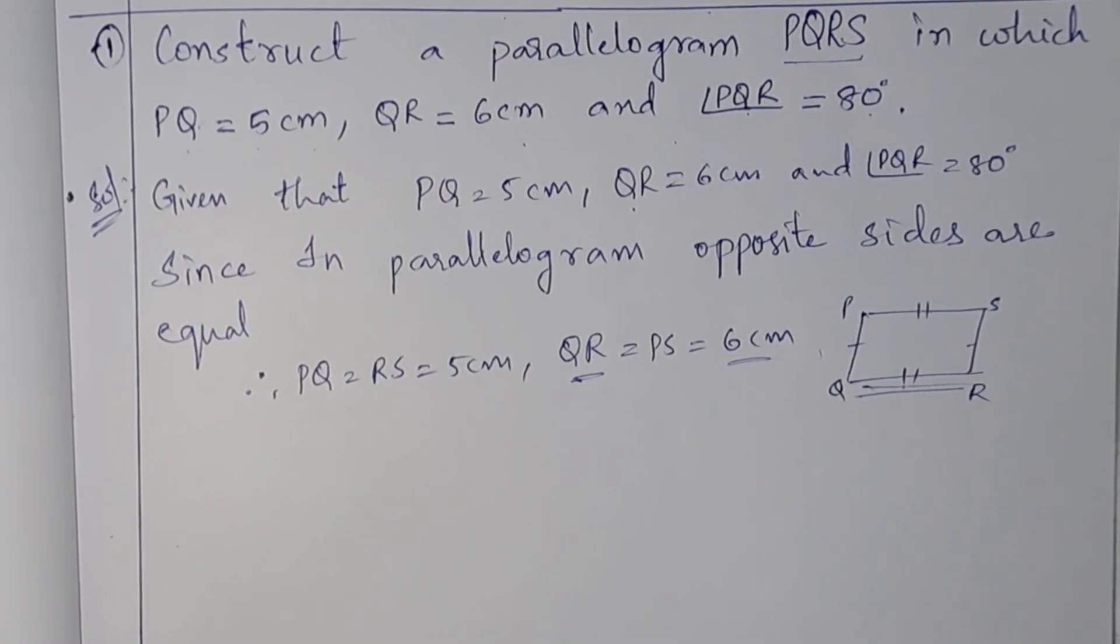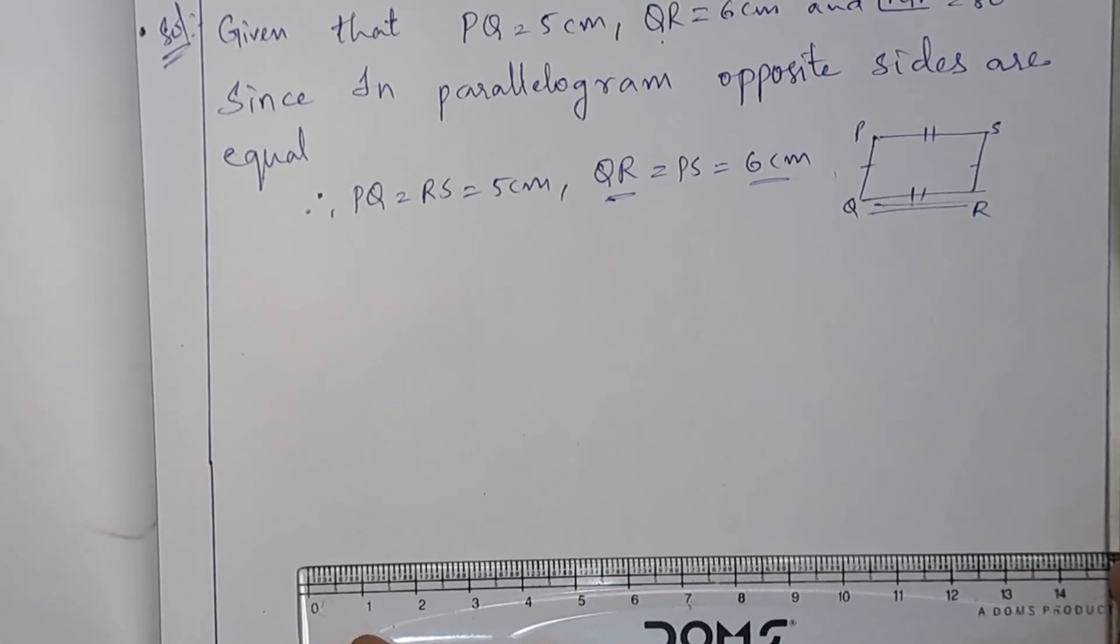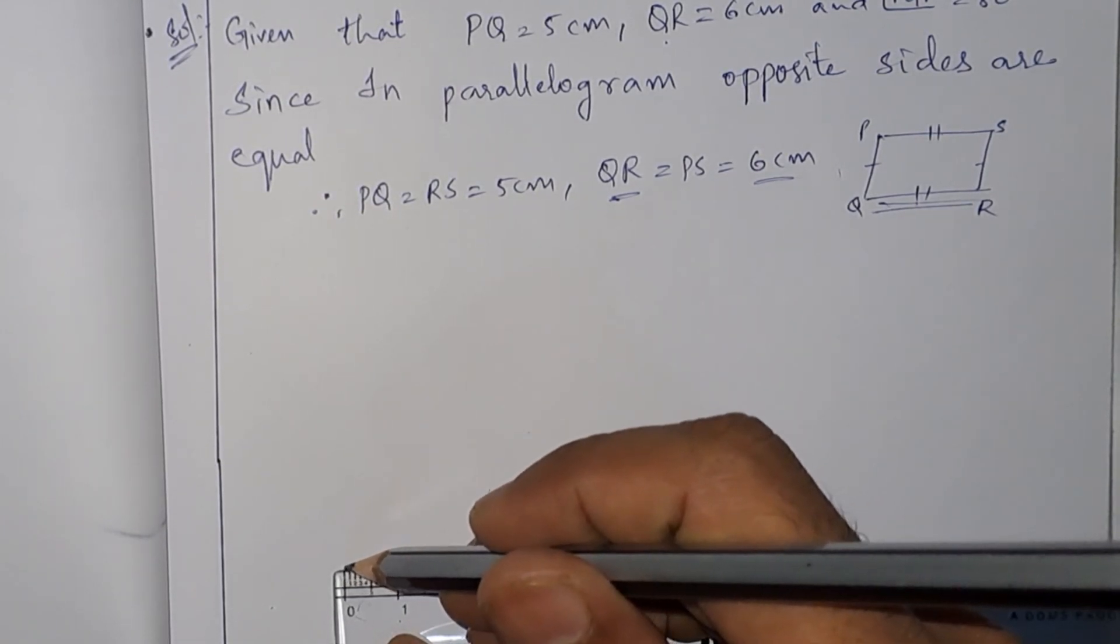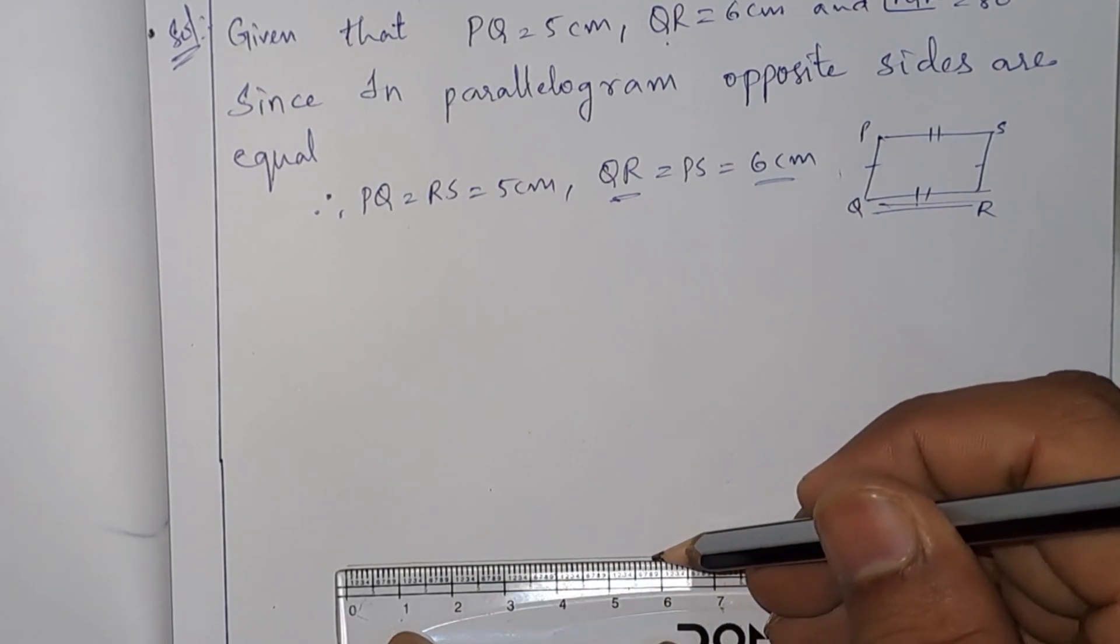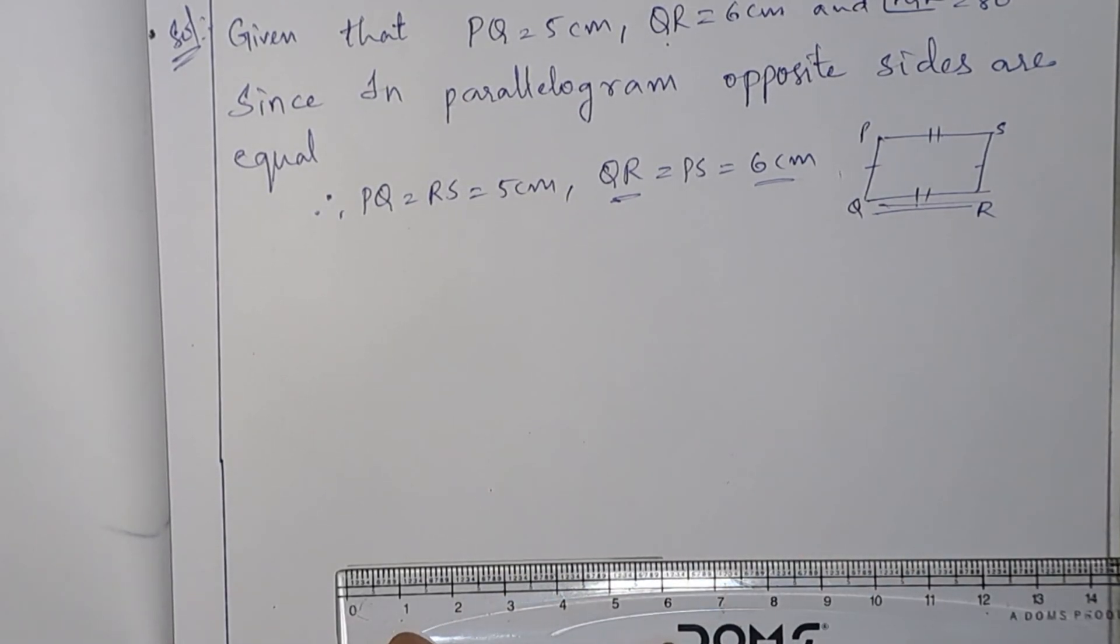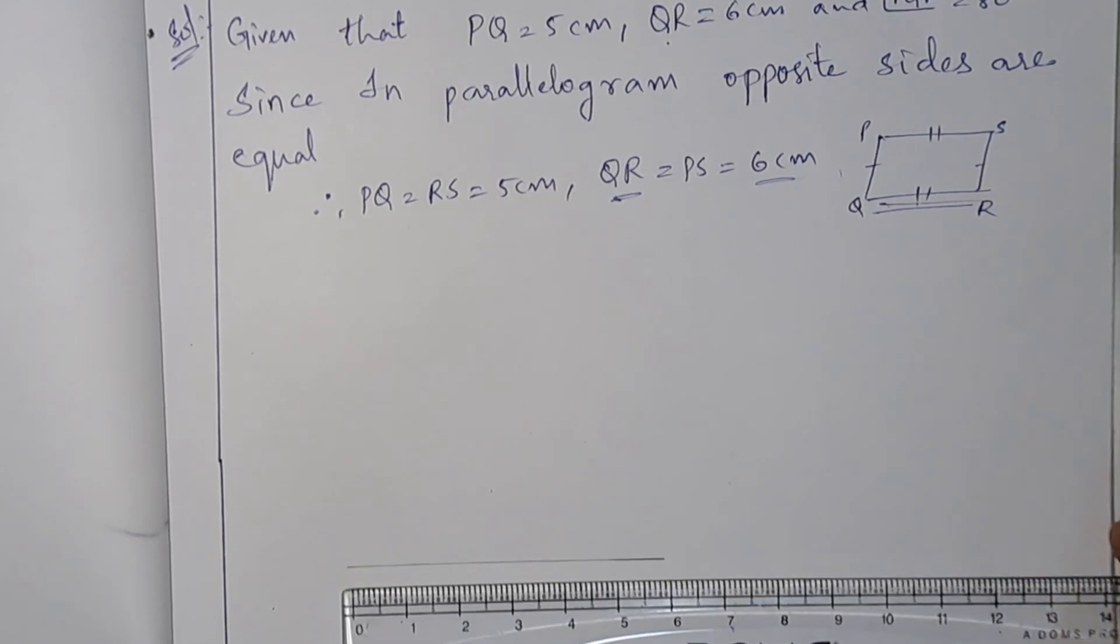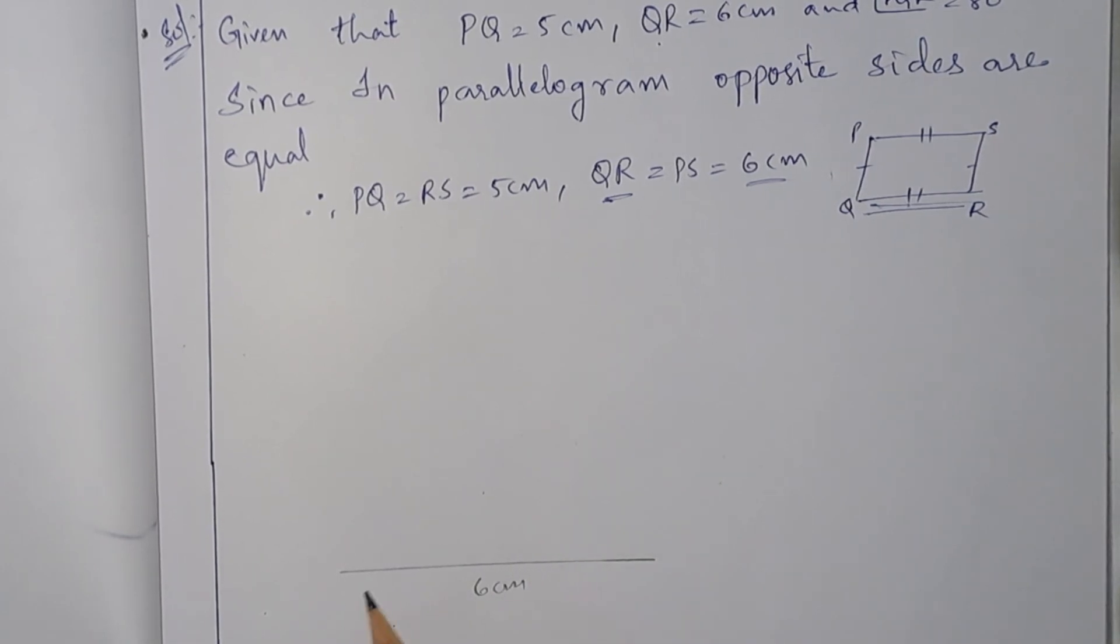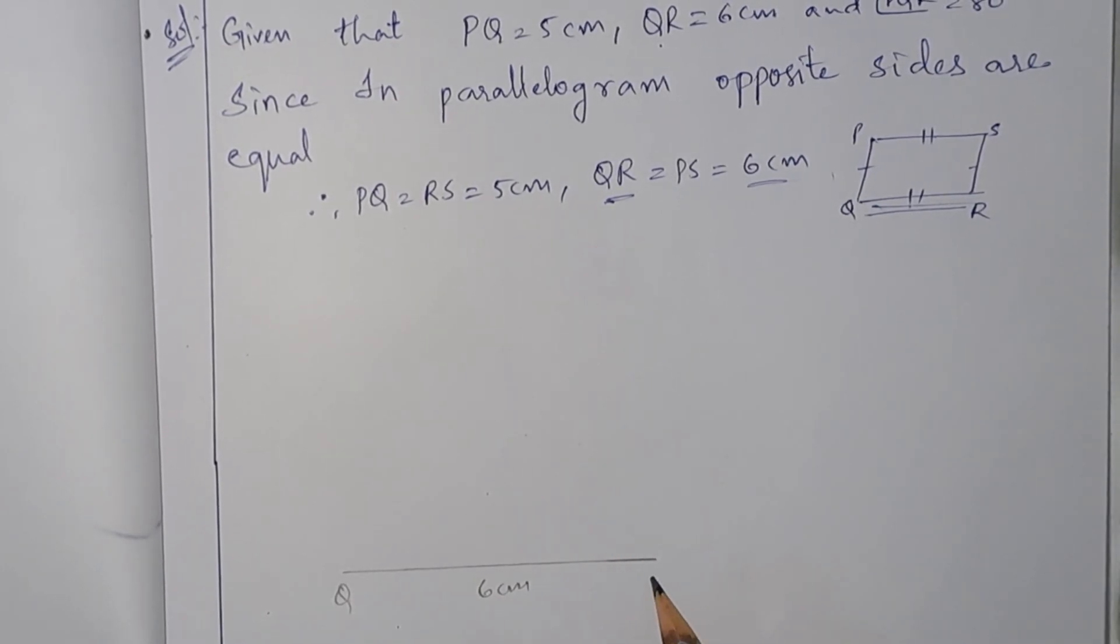With the help of the ruler, first we will draw a line segment of 6 centimeters. So this is QR.